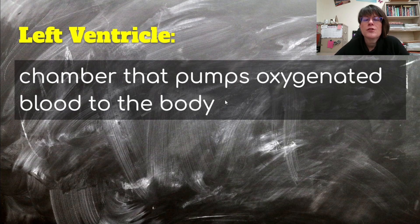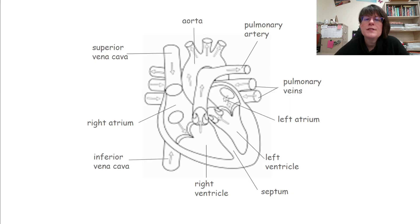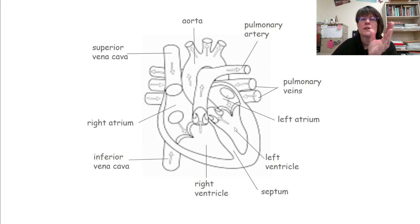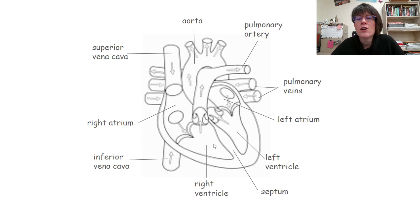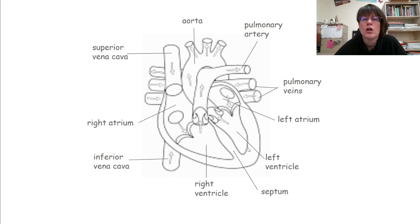From the left atrium, blood goes to the left ventricle, which is the chamber that pumps oxygenated blood to the body. On the left side of the heart we have oxygenated blood. Blood goes from the left atrium to the left ventricle and then gets pumped to the rest of the body. I remember that ventricles are on the bottom because they form a V shape. Look at how muscular the heart is at the bottom — the ventricles have to be very strong to pump blood to the rest of the body.